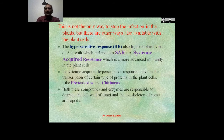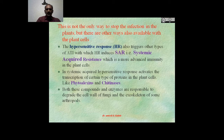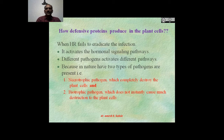ETI is not the only way to stop infection in plants — there are other ways available. The hypersensitivity response also triggers other cells via ATI, by which HR induces SAR, that is systemic acquired resistance, which is a more advanced type of immunity. In systemic acquired resistance, the hypersensitivity response activates the transcription of certain proteins in the plant cell like phytoalexins and chitinases. Both these compounds and enzymes are responsible for degrading the cell wall of fungi, since fungal cell walls are mostly made up of chitin, and also the exoskeleton of some arthropods. When HR fails to completely eradicate infection, it activates the hormonal signaling pathway.